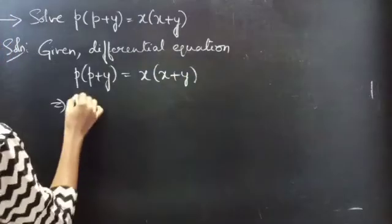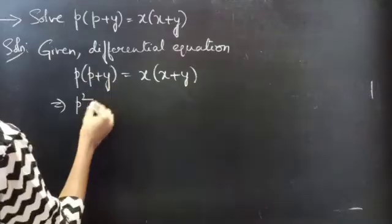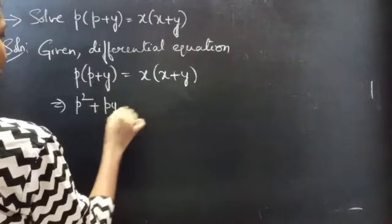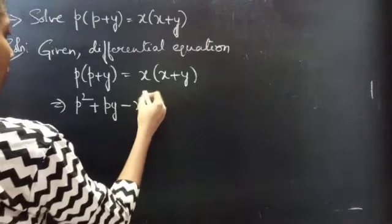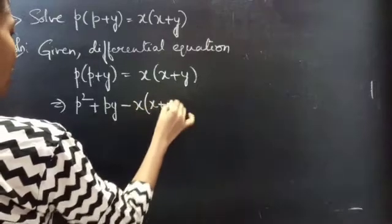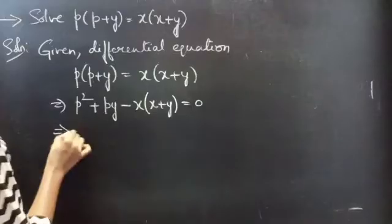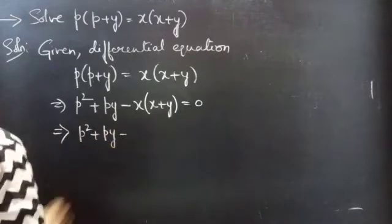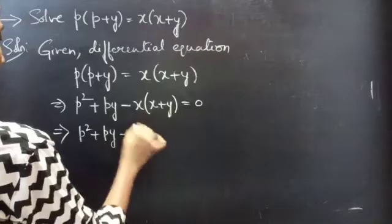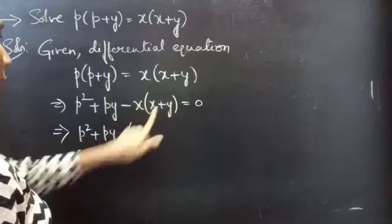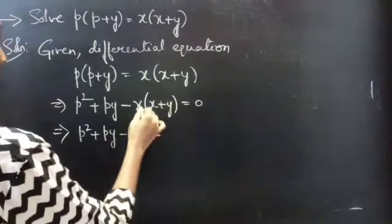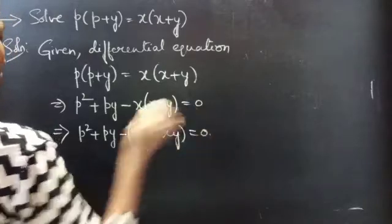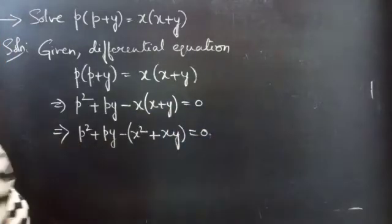We can write this as P into P, which gives P² + P·Y, minus X times (X + Y) equals 0. Then P² + P·Y minus X² minus X·Y equals 0, which is quadratic in P.